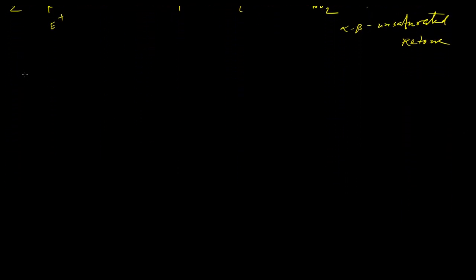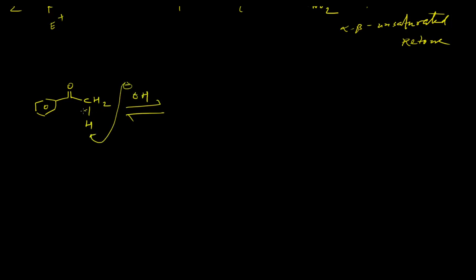Let us now consider the reaction mechanism of the Claisen-Schmidt reaction, considering the second reaction. The initial step will be the abstraction of the alpha hydrogen atoms by the base, which will lead to the formation of the corresponding enolate anion.